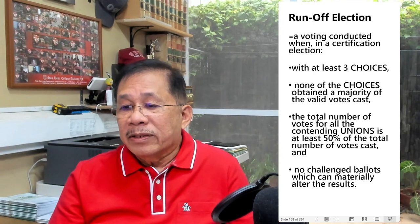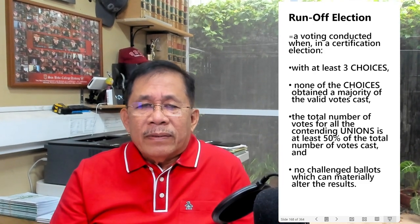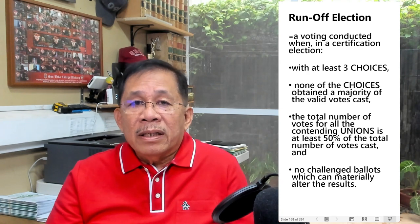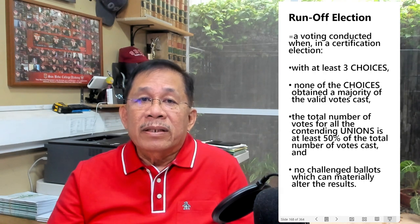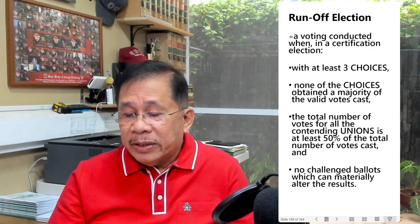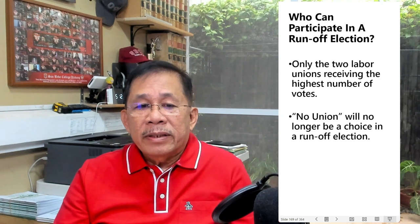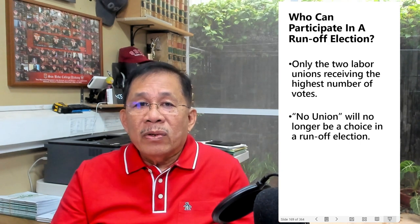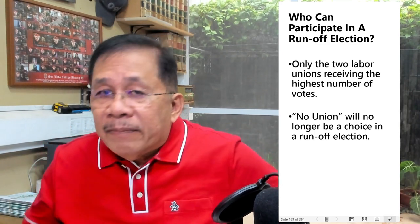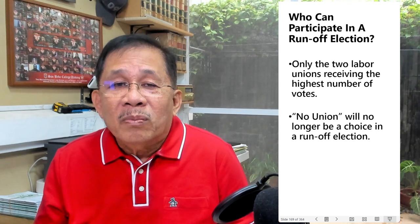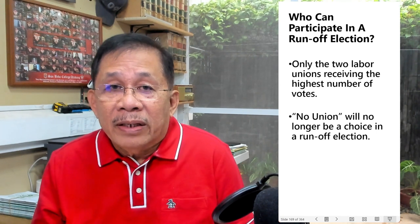A run-off election is a voting conducted when, in a certification election with at least three choices, none of the choices obtained a majority of the valid votes cast, and the total number of votes for all the contending unions is at least 50% of the total votes cast without challenge ballots that can alter the results. Only the two unions receiving the highest number of votes can participate in a run-off election — the no-union choice is no longer a participant. If the second highest number of votes is a tie between two or more unions, that tie must first be broken through a rerun election.